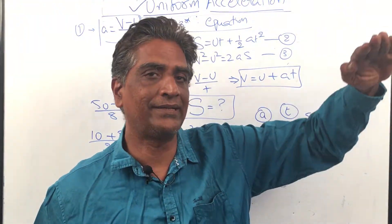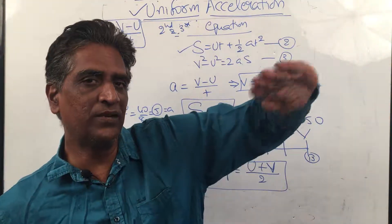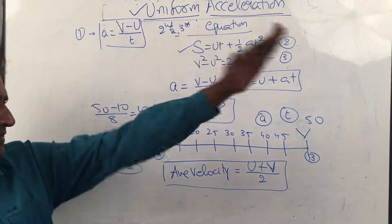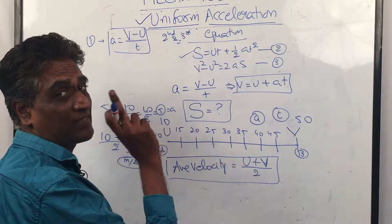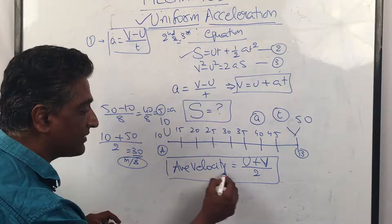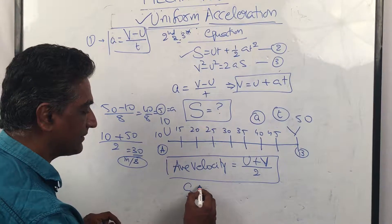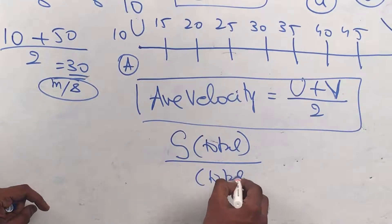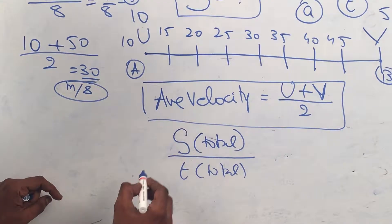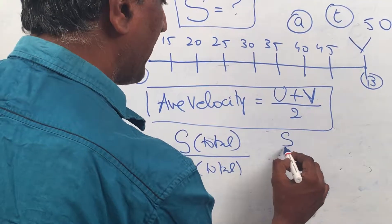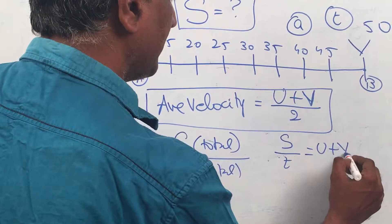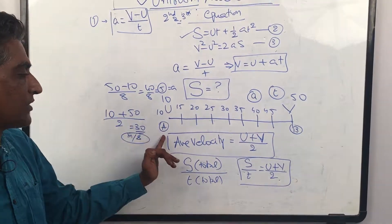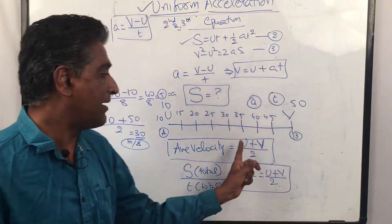You can feel it intuitively: if instead of going 10, 15, 20... you just go at 30 directly, it covers the same distance. The average velocity formula is total displacement divided by total time, so s / t = (u + v) / 2. This is the linking equation.